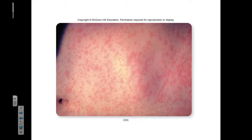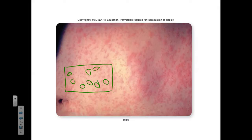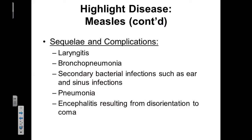Here is the classic rash associated with measles. Notice how the skin is covered in a wide variety — or very uniform mat — of red bumps that are quite scratchy. The sequelae and complications that can be associated with measles are laryngitis, bronchopneumonia, secondary bacterial infections, pneumonia, and encephalitis. Sequelae is a term that defines a secondary complication that happens as a result of a disease.